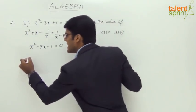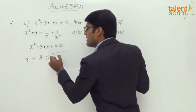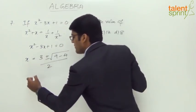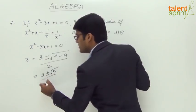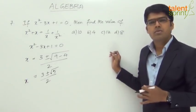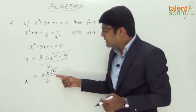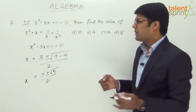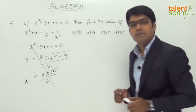Let's go ahead with the formula. x equals minus b, which is 3, plus or minus root over b squared — that's 9 — minus 4ac, which is 4 into 1 into 1, divided by 2a. So we get 3 plus or minus root of 5, divided by 2. The values of x are 3 plus root 5 by 2 or 3 minus root 5 by 2. But substituting any of these values in the expression is going to get complicated, and we will end up wasting a lot of time.